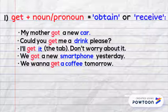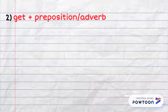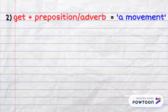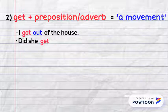Two: Get plus preposition or adverb equals a movement. I got out of the house. Did she get away?